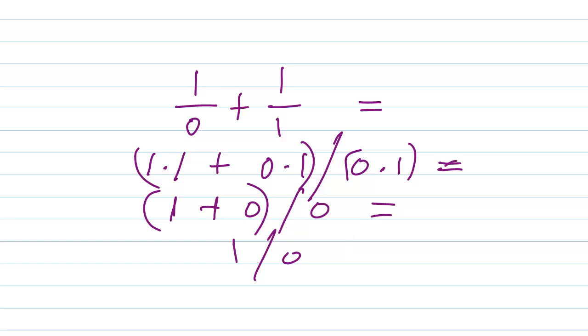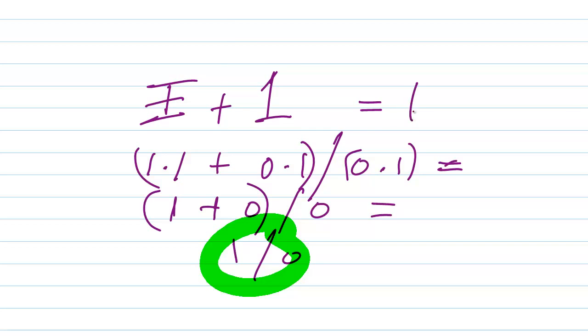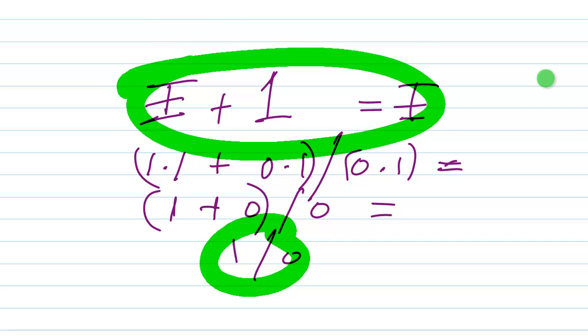So this, it works for this particular iteration or concept or notion of what we would expect infinity to behave like. If you add 1 to this quantity here, this Yagi, if you add 1 to that, then you get Yagi all over again. So that works.